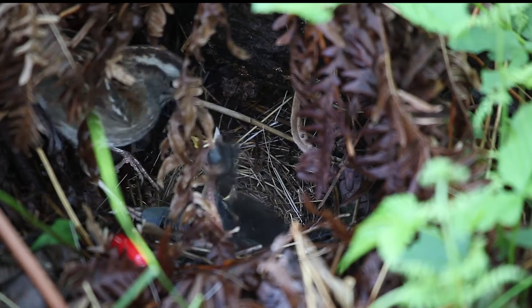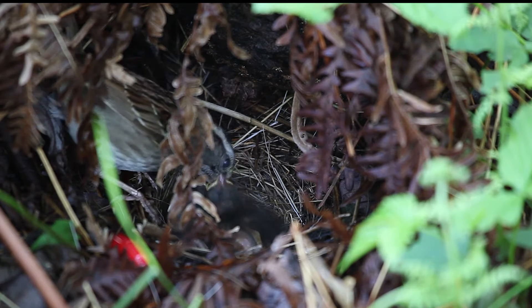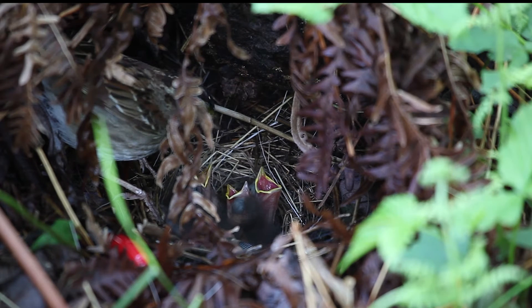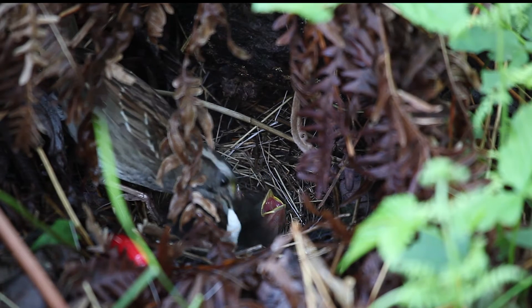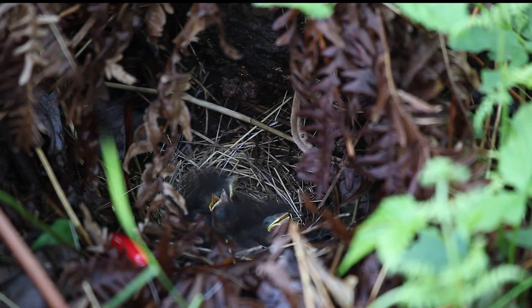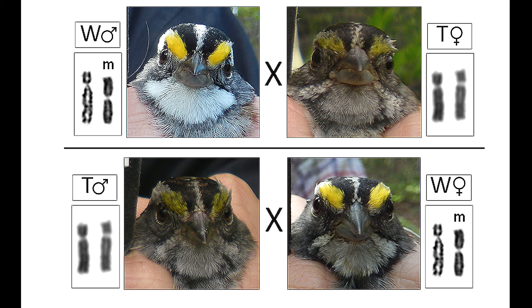Tan morphs, on the other hand, are duller in plumage with tan stripes on their head. They are less aggressive, they sing less, they are far more parental, and they are monogamous. Both morphs occur in males and females. Morphs and all the associated behaviors are determined by the alternate supergene alleles, which are located on a chromosomal inversion on chromosome 2.